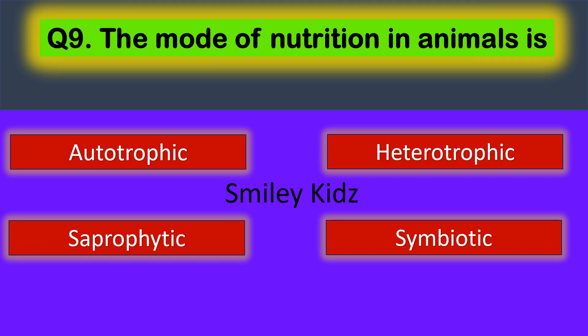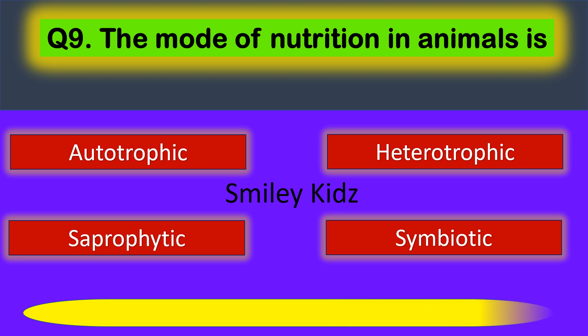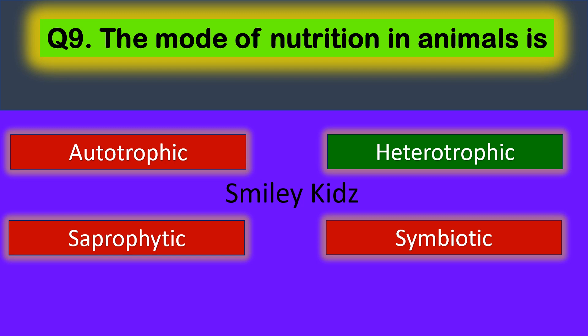Question number 9. The mode of nutrition in animals is... Your options are Autotrophic, Heterotrophic, Saprophytic, and Symbiotic. The correct answer is Heterotrophic. The mode of nutrition in animals is Heterotrophic.